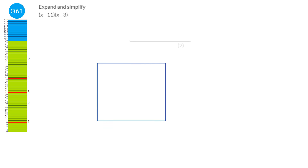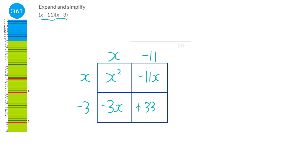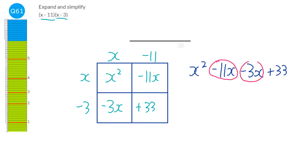We do a multiplication grid — x minus 11 multiplied by x minus 3. X times x is x squared. X times minus 11 is minus 11x. X times minus 3 is minus 3x. Minus 3 times minus 11 is positive 33 because two minuses make a plus. Putting the terms together and collecting the x terms: minus 11x and minus 3x gives minus 14x. So the answer is x squared minus 14x plus 33.